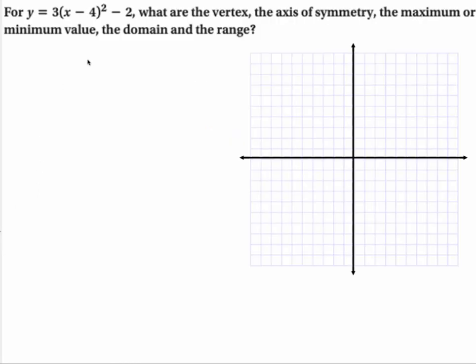Now, suppose I have the equation y = 3(x - 4)² - 2. What's the vertex? Well, y = a(x - h)² + k. When I line these up...